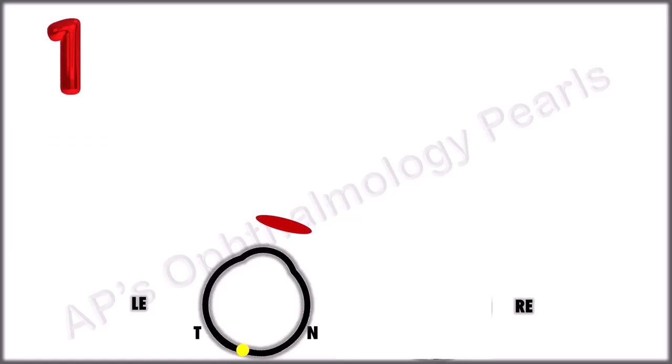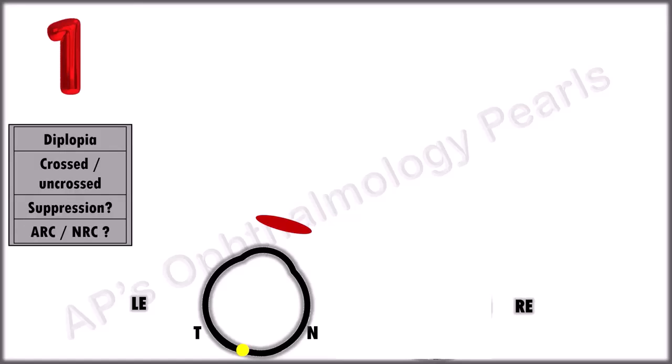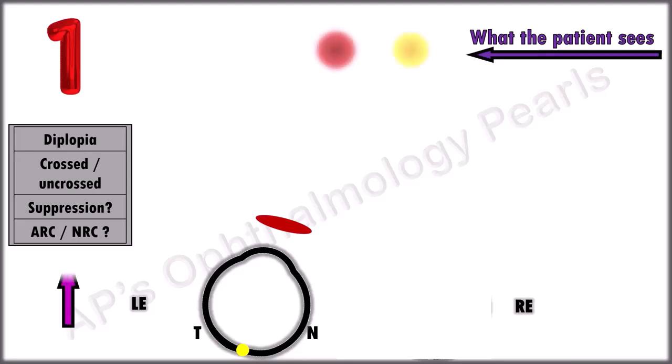For every scenario, we have to answer these questions. So in scenario 1, this is what the patient sees. Diplopia, yes, it is present. Crossed or uncrossed? It is uncrossed.